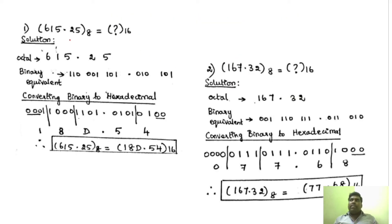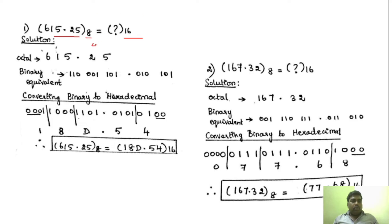Even if the question is not given directly as 'convert octal to hexadecimal,' by looking at the base you can understand — this is the octal number by looking at this base, and we have to convert it to base 16, that is hexadecimal. So if we convert this number, the first thing we have to do is convert this octal number to binary. For that, I will use the 421 code.